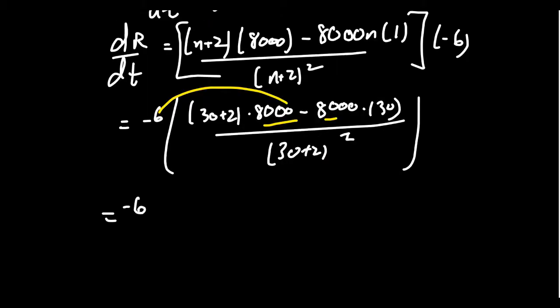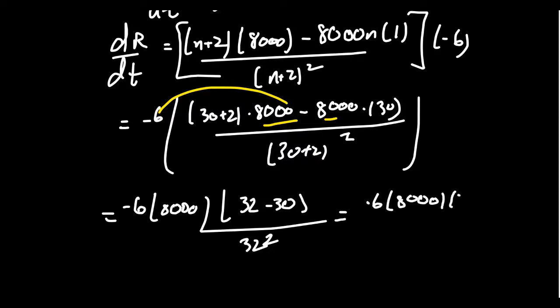We're going to get negative 6 times 8,000, and then what's left behind you have 32 minus 30. This sits above 32 squared, which of course 30 taken away from 32 gives you a 2. That's easy enough: 8,000 times 2 and then 32 squared is going to be 1,024. So 2 goes into 1,024, 512 times, and we can keep simplifying.